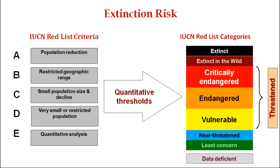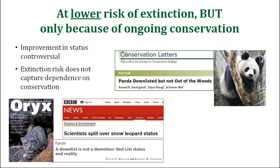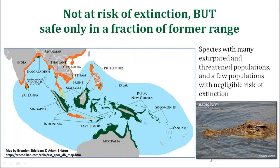As chair of the RedList standards and petitions committee, I have heard many complaints about the RedList over 20 years. In most cases, these result from misunderstandings and misconceptions, and we try to correct this by developing more detailed guidelines. But some complaints do have a point — they point out the inadequacy of using extinction risk as the only metric of conservation status. For example, there are many species that are improving and have a lower risk of extinction because of conservation.